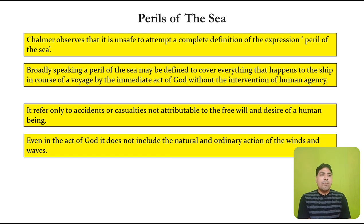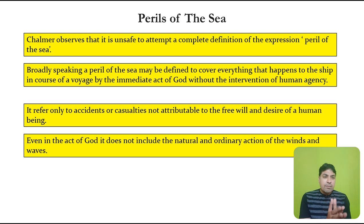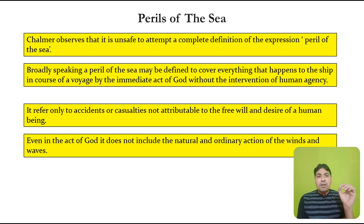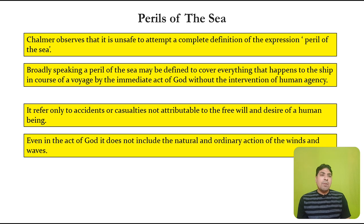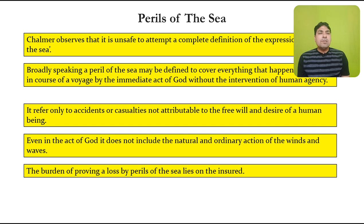Even under the act of God, it does not include the natural and ordinary action of winds and waves. Something more than natural winds and waves must occur for it to qualify as perils of the sea. The insurance company pays loss only in case of loss caused to the policy holder due to perils of the sea. The burden of proving a loss by perils of the sea is on the insured.